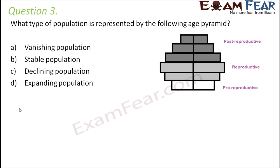Question number three: What type of population is represented by the following age pyramid? Looking at the pyramid, there are more people in the older age groups compared to the younger age groups. Even the post-reproductive blocks show a good number compared to younger groups. This is an example of a declining population — where there are fewer younger people than older people.